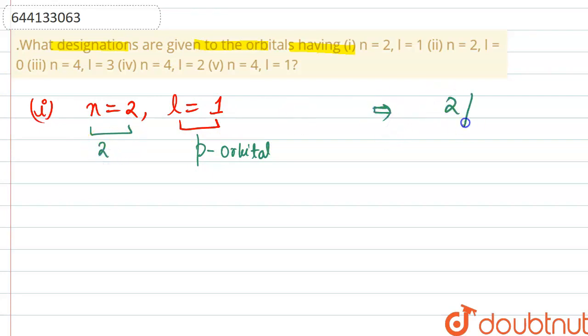Now talking about the second one that is given to us: n = 2 and l = 0. So for l = 0, we are having s orbital, and second shell is there, so it would be 2s.